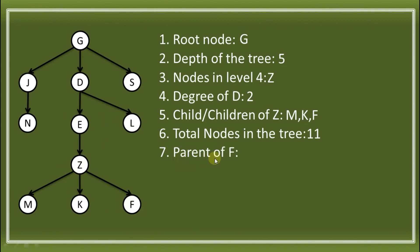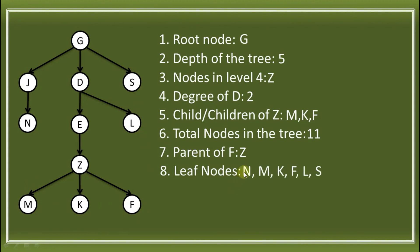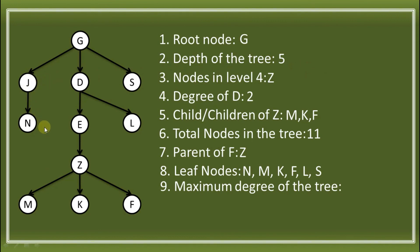Next, the parent of F is Z — that is where the arrow or edge comes from. Then, identifying the leaf nodes: the leaf nodes are N, M, K, F, L, and S. Finally, the maximum degree of the tree: looking at the tree, the root node G has a degree of 3, D has a degree of 2, and Z also has a degree of 3. So the maximum degree of the tree is 3.